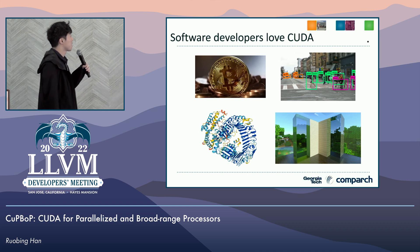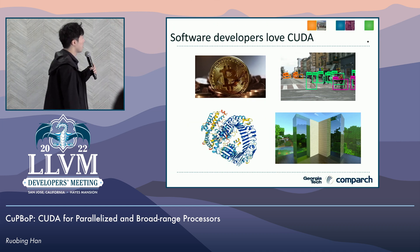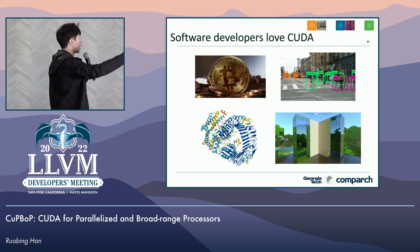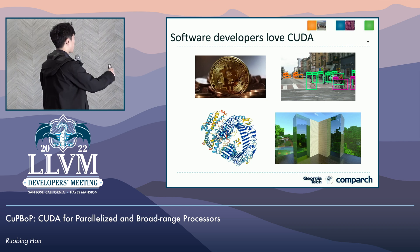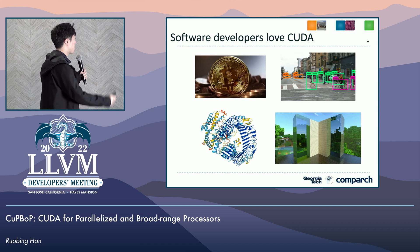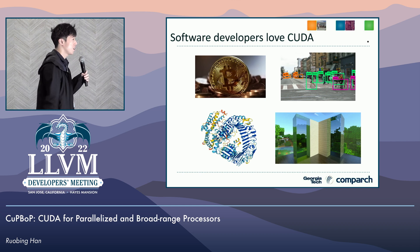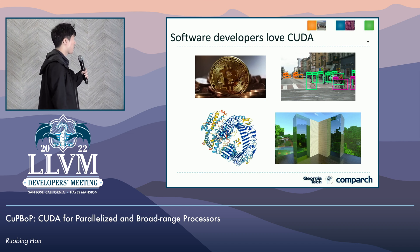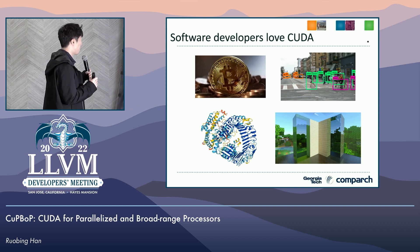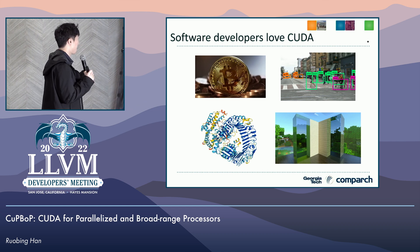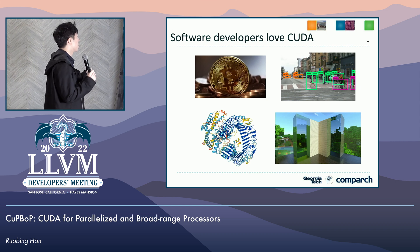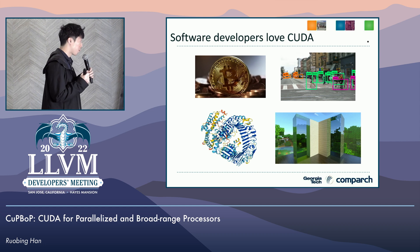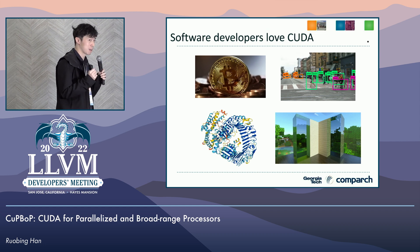For motivations, on the software side, applications like cryptocurrencies, computer vision, neural structure predictions, and computer graphics like ray tracing — all those applications require execution on GPU architectures to achieve peak performance. And due to well-organized documentation and tutorials, CUDA became one of the most popular choices for software developers.